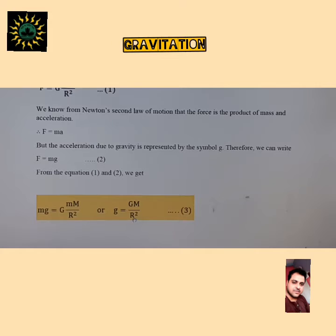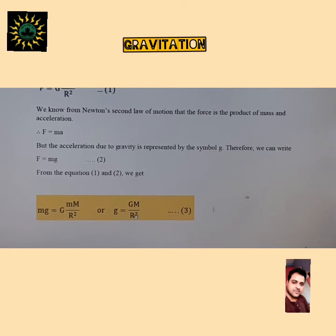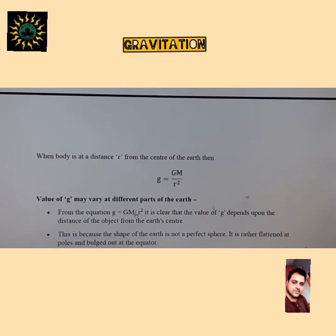At the Earth's surface, R is the distance from the surface to the center of the Earth. For a particular region on the Earth, R remains constant, so g is constant for any object in that region. However, if you compare the value of g in a plain region versus a hilly or elevated area, the distance of separation between the object and the center of the Earth will change, so g will vary.